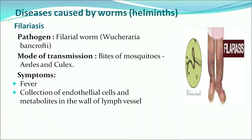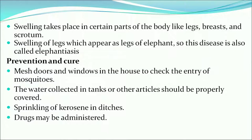Now we will discuss disease caused by worms — helminths. The first is filariasis. The pathogen is the filarial worm; mode of transmission is bites of mosquitoes — Aedes and Culex. It results in high fever, collection of endothelial cells and metabolites in lymph vessel walls, and swelling in body parts like legs, breast and scrotum. Swelling of legs resembles elephant legs, so the disease is also called elephantiasis. Prevention includes mesh doors and windows, and keeping water tanks properly covered.